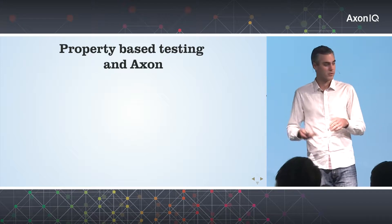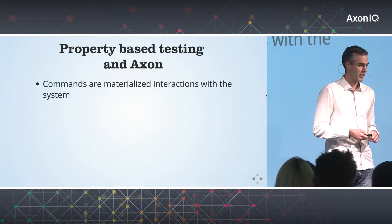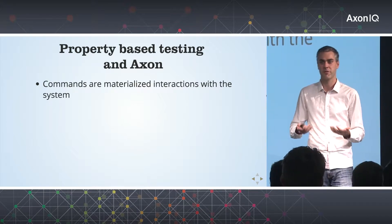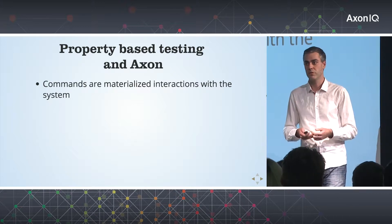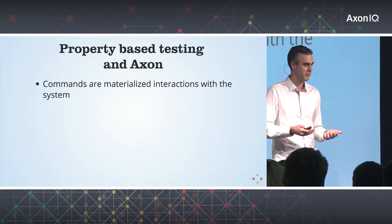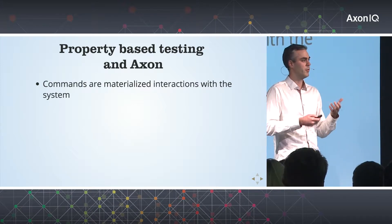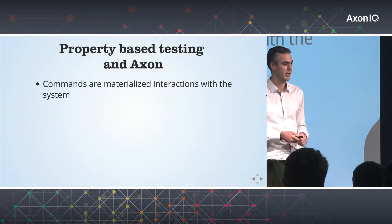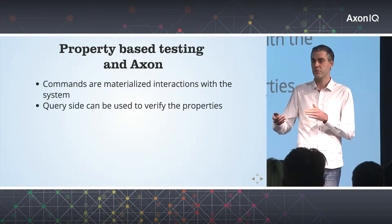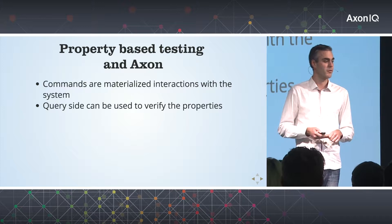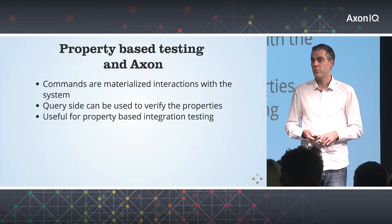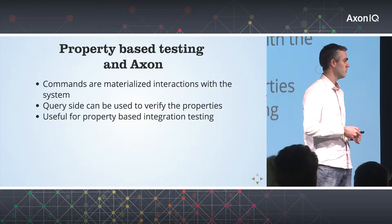So how would this look for Axon? And why is this applicable to Axon? In Axon, commands are materialized interactions with the system. So generating the input of your integration test, we can generate commands, which are actually things in our Java application. And we can use the query side to check the output of the system and use that to verify the properties. So the two things are well aligned to work together.